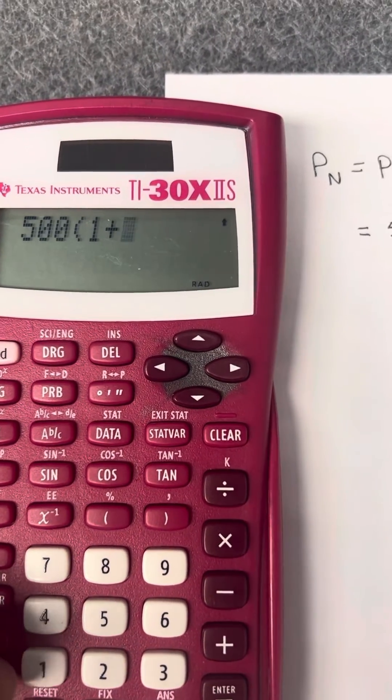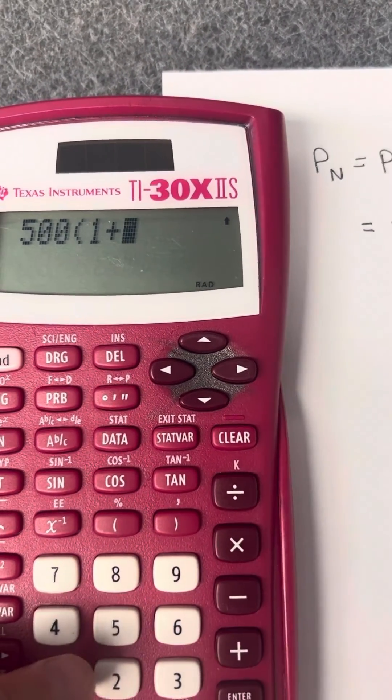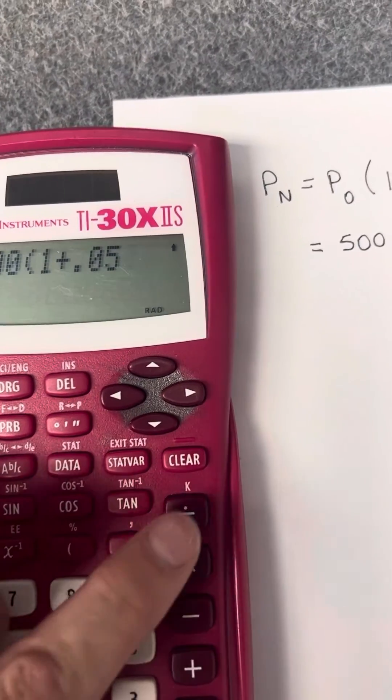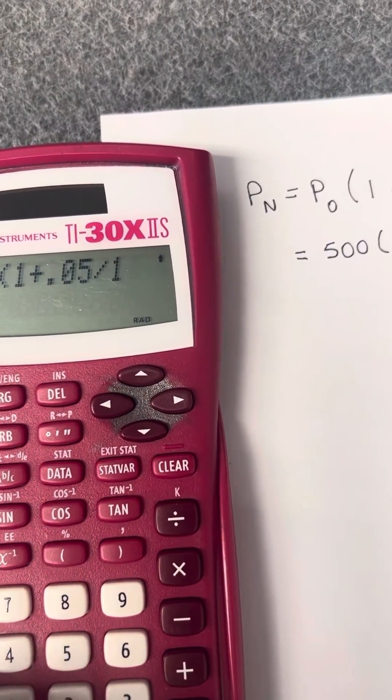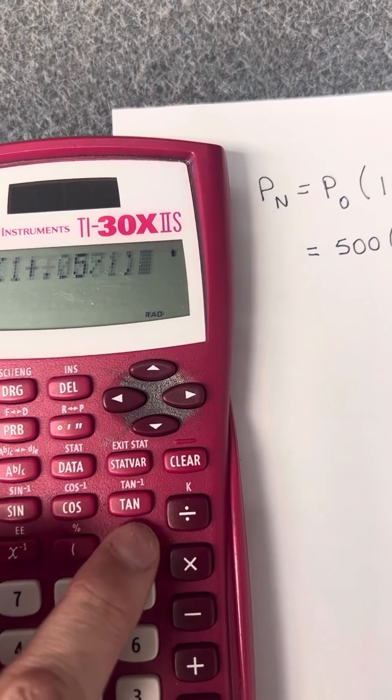Your calculator is going to follow order of operations, so you don't need to put that in parentheses. You can put 0.05 divided by 1 and then close that whole group of parentheses.